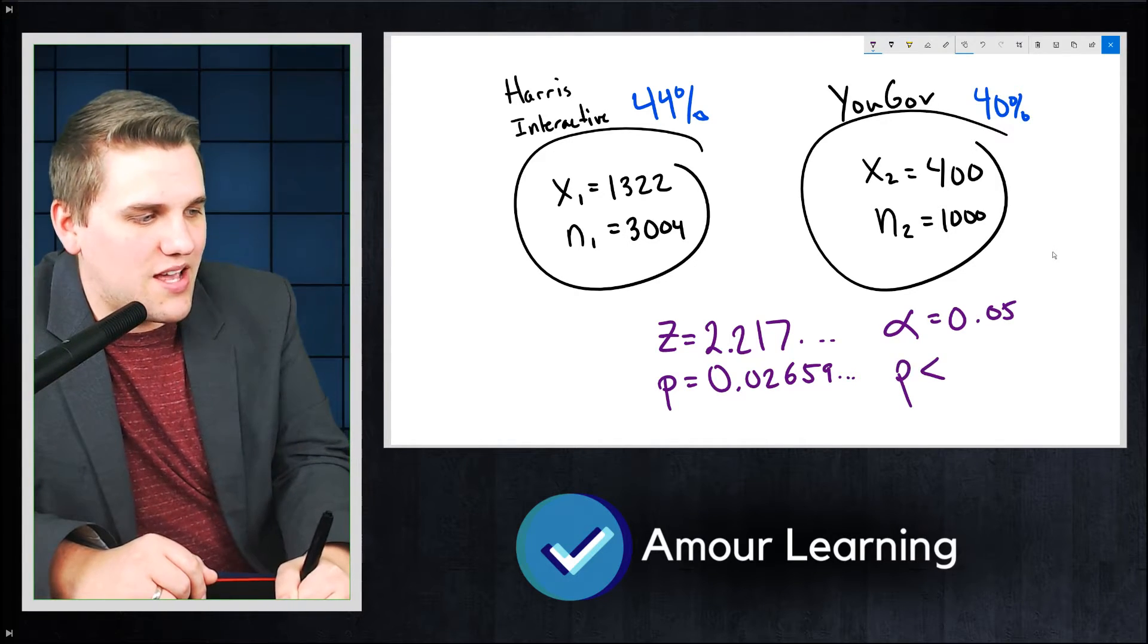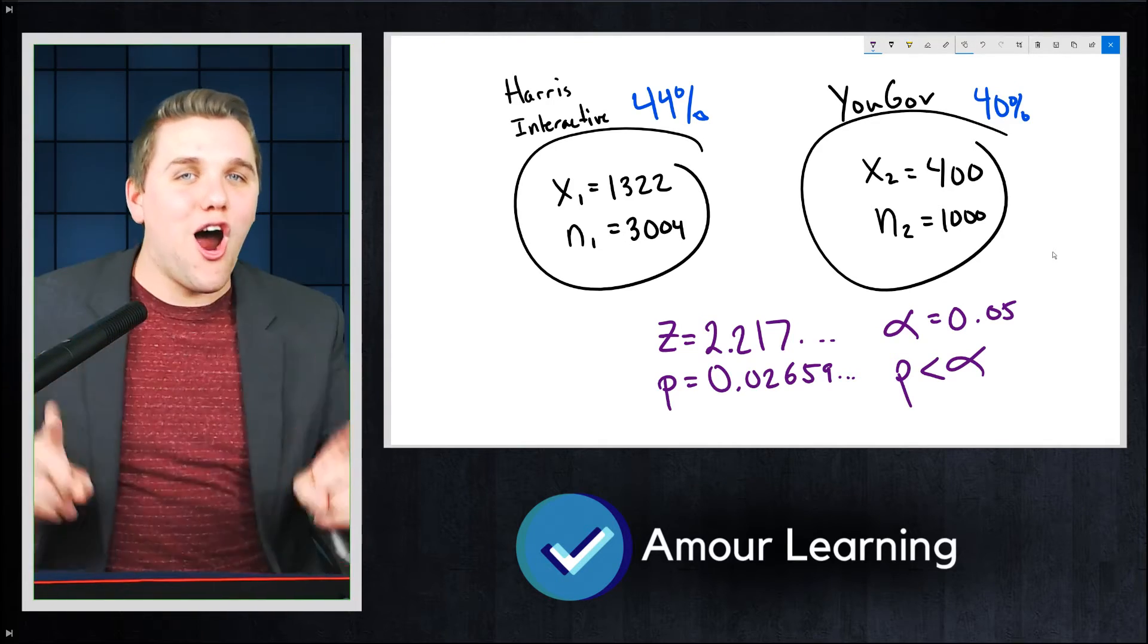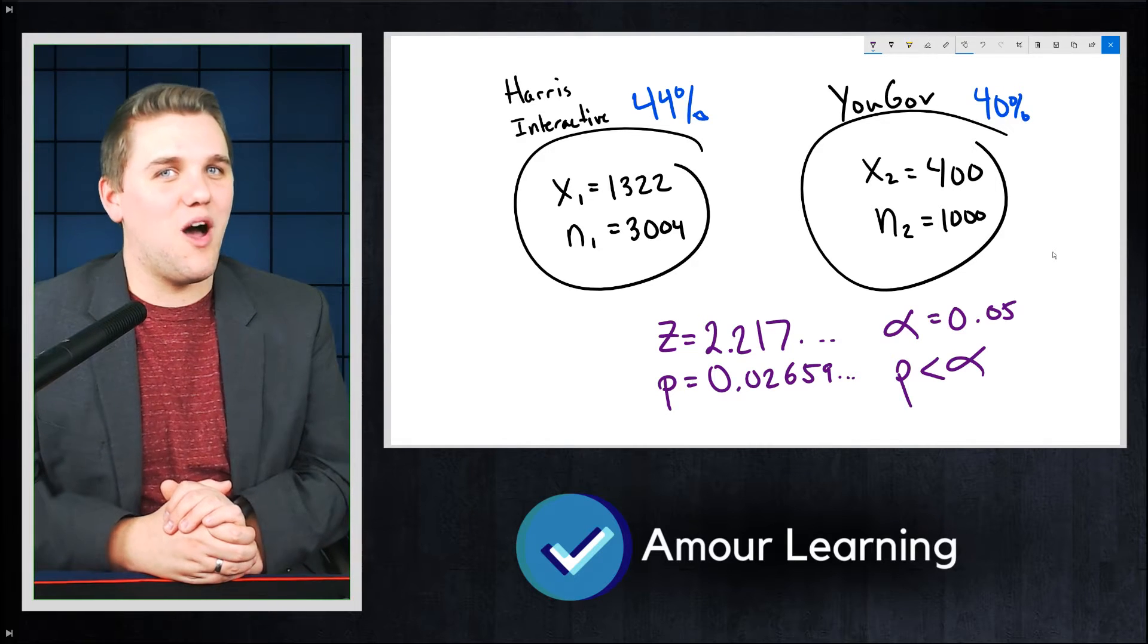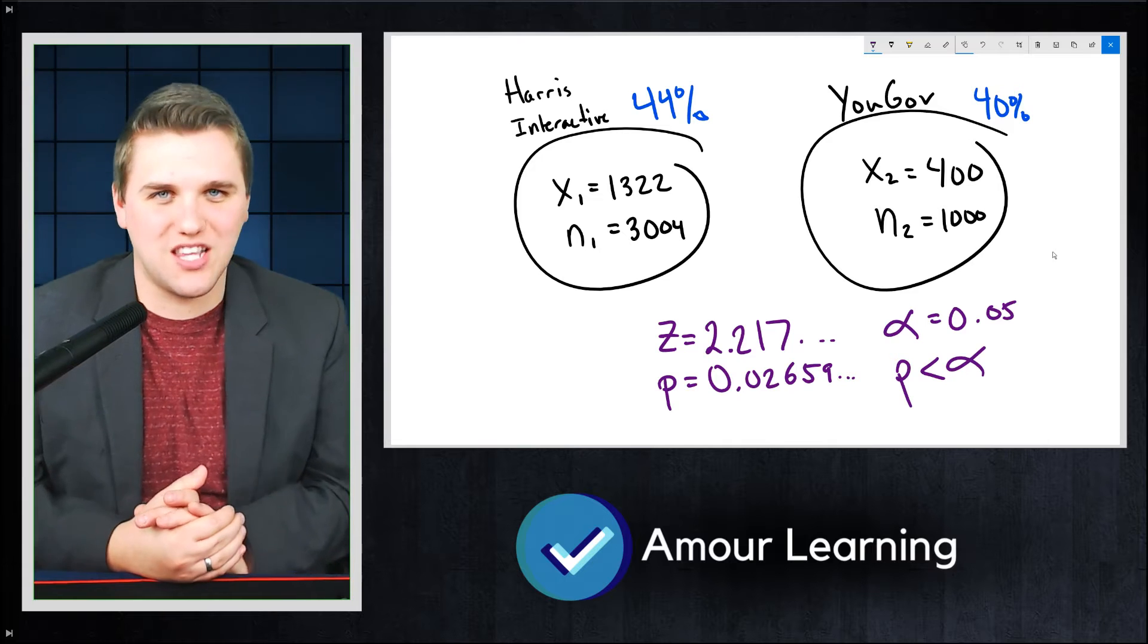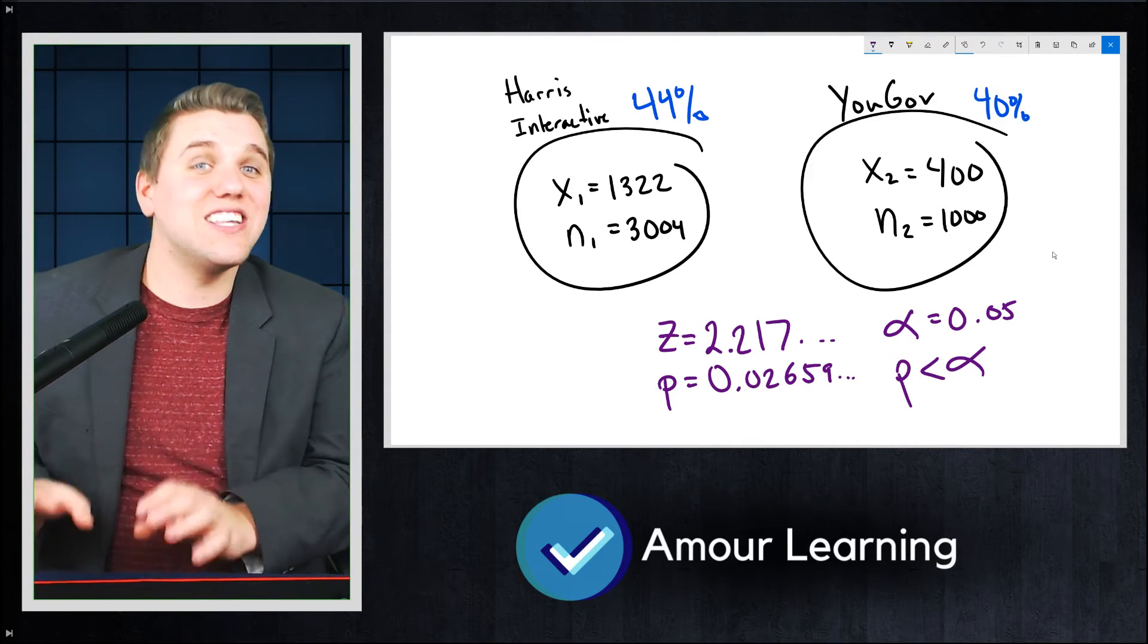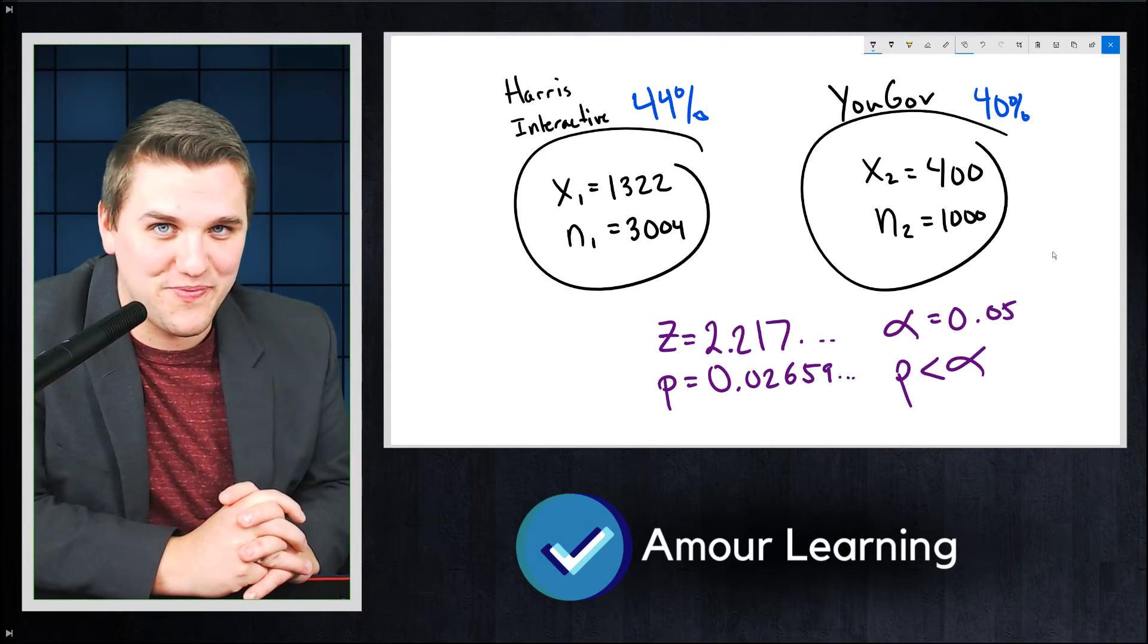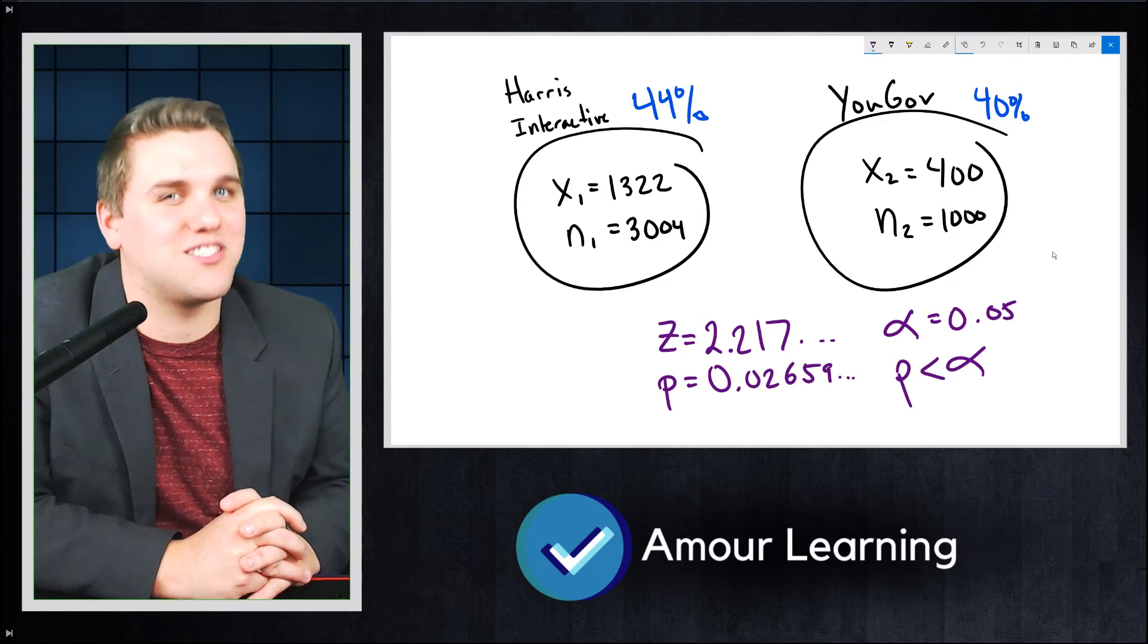meaning that these two tests are statistically significant from each other. So, at least one of these polls is conducting their poll in a way that's influencing their sample so that it is actually different than the other sample, meaning that there's bias involved. One of these polls has some bias.